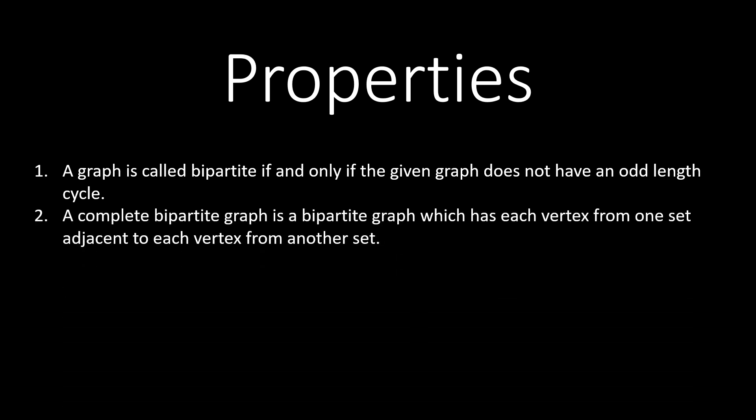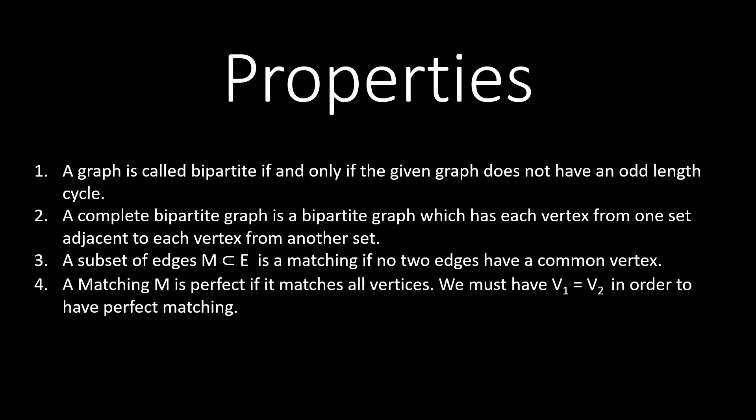Let's discuss the properties of a Bipartite Graph. A graph is called Bipartite if and only if the given graph does not have an odd length cycle. A complete Bipartite Graph is a Bipartite Graph which has each vertex from one set adjacent to each vertex from another set. A subset of edges M from E is a matching if no two edges have a common vertex. A matching M is perfect if it matches all the vertices. We must have V1 equals to V2 in order to have perfect matching.